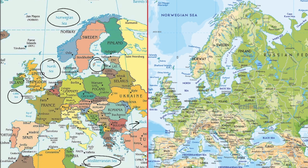Now it is time for physical features. Let us look at the mountain ranges of this region. We start with the Spanish peninsula — these are the Cantabrian mountains. Then on the border of France and Spain we find the Pyrenees. The Pyrenees and Cantabrian mountains are of Hercynian origin.